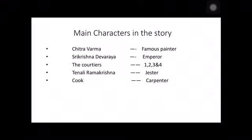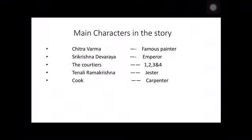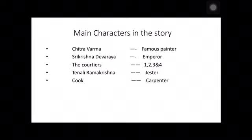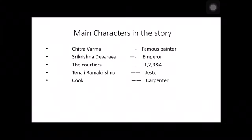There are four courtiers in this play. And there is Tenali Ramakrishna, who is the jester and the advisor of the king — he is very funny, creates humor in the court, makes everybody laugh, and is very wise. There is also a cook who is a carpenter. Now, by this point you must have got the idea — a cook who is a carpenter! To understand this humorous situation, we have to look into the story, Clever Tenali Ramakrishna.